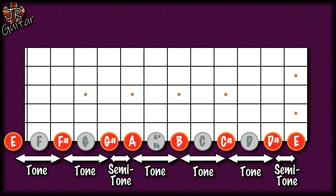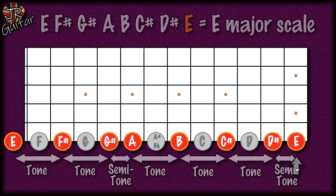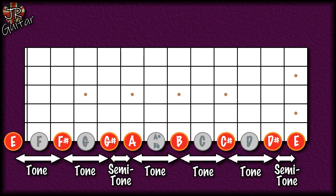When you build a major scale, you always use this particular pattern of steps: start with your root note and go up a tone (two frets), then another tone, a semitone (one fret), then a tone, tone, tone, and finally a semitone. Any note you begin on and follow the pattern tone-tone-semitone-tone-tone-tone-semitone will give you a major scale — so starting on G gives you G major, starting on C gives you C major, and so on.